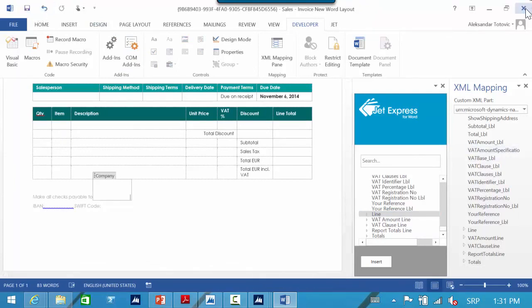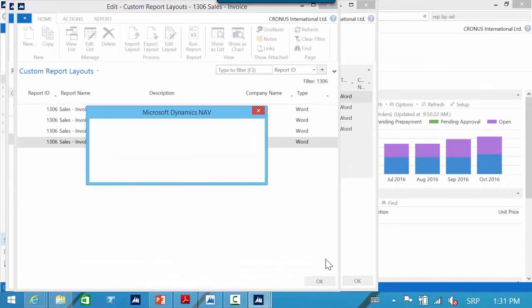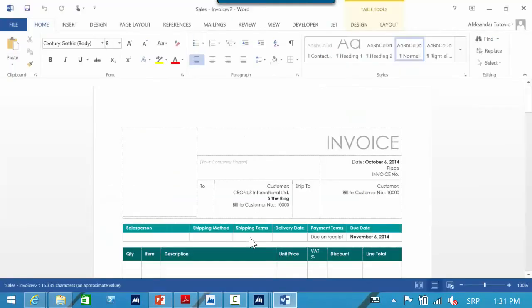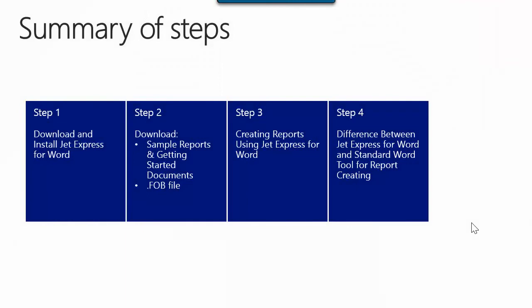When you finish everything, you need to save the file and import changes. When you run this report, you will see the new report layout. In the previous steps, you could learn how to download and install JetExpress for Word and how to download and use sample reports and FOB file. You also could learn how you can use this tool in the report creating process and what are the main differences compared to the standard Word tools. Thank you for watching this video and I hope you enjoyed. I invite you to follow other How Do I videos for Microsoft Dynamics NAV 2015.